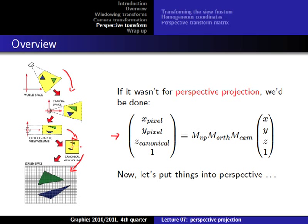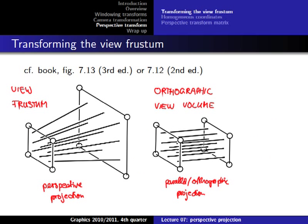For the perspective projection we have to introduce something new to our matrix technology to be able to do that with matrix multiplication. So let's try to understand what happens when we do the perspective projection. We have this view frustum where we want to do a perspective projection with our near plane and our far plane, and then we want to move that into an orthographic view volume.